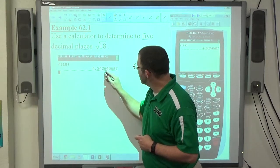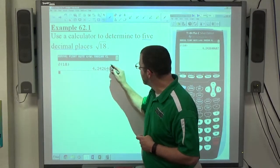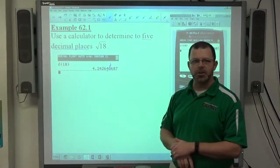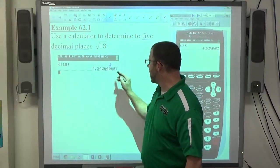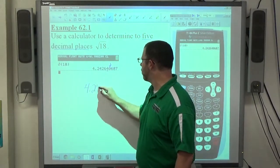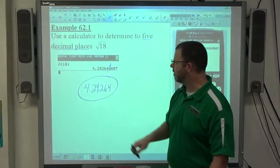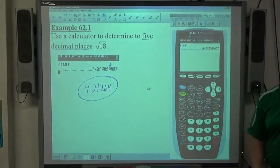4.242640, so this is the fifth decimal place. That's the next digit after four, which is less than five, which means we just chop that off. So we get 4.24264 as the approximate square root of 18, rounded to five decimal places.